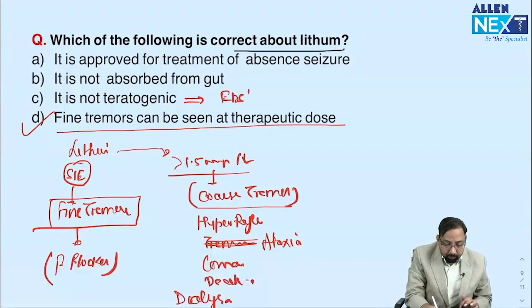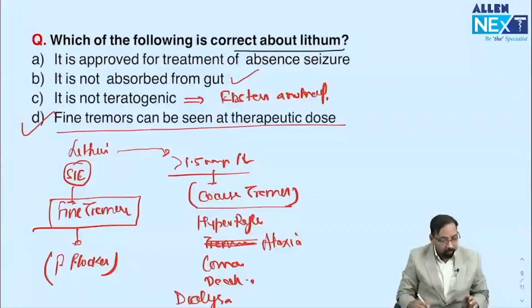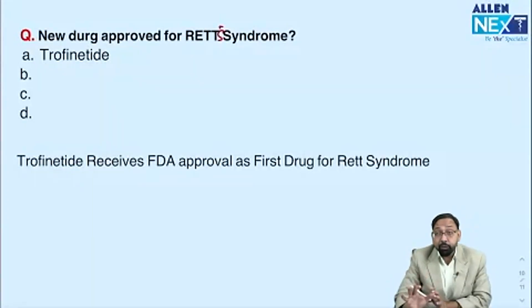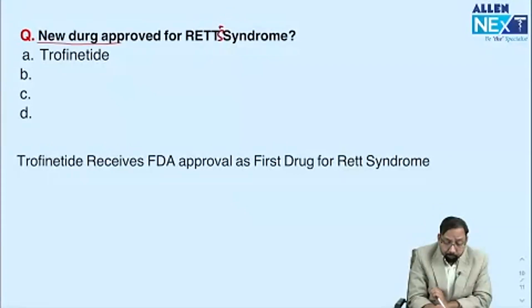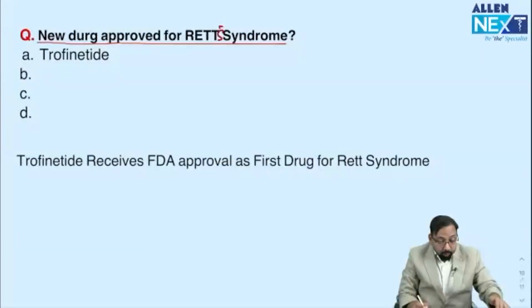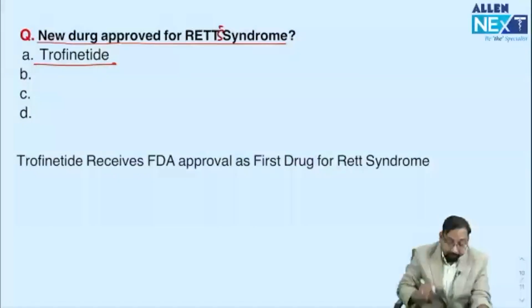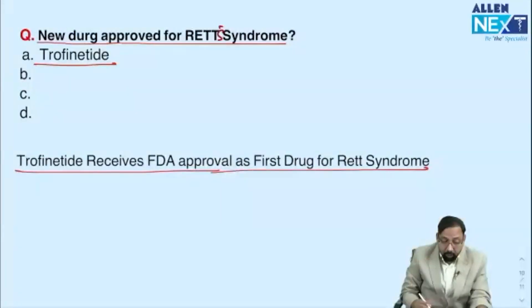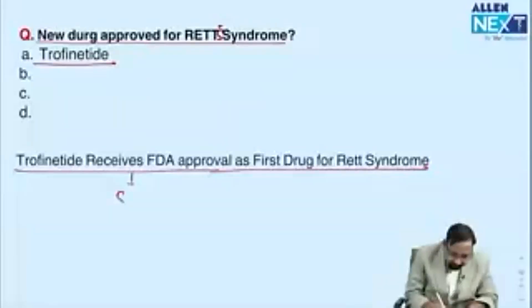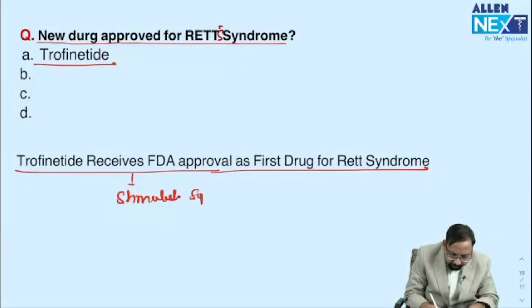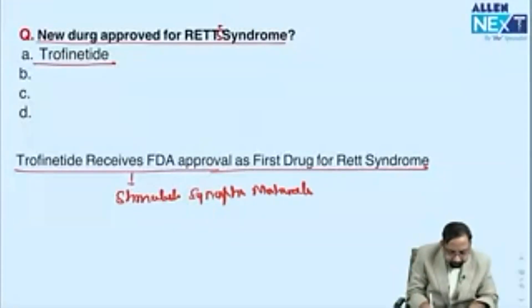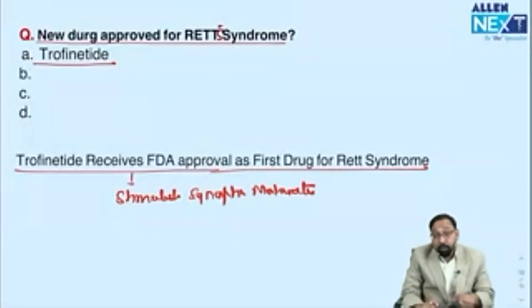Lithium is also teratogenic — it causes Ebstein's anomaly. It is not approved for absence seizures. The last question is about a new drug approved for Rett syndrome: crofenatide (trofinetide) received FDA approval recently, within the last two to three months. Its function is to stimulate synaptic maturation.